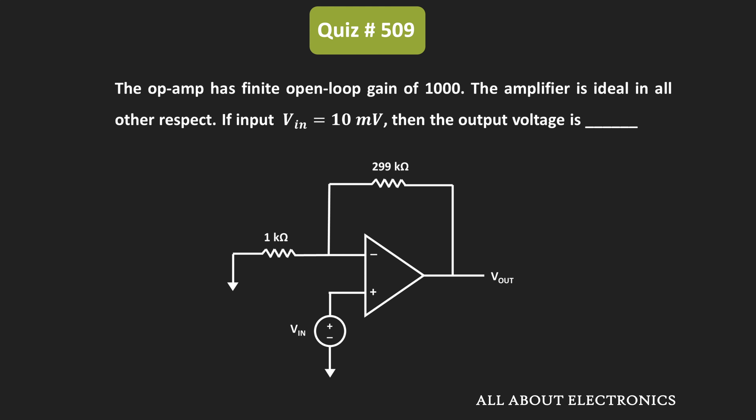Hey friends, welcome to the YouTube channel All About Electronics. In this question, we have been given an op-amp based circuit where the finite open-loop gain of the op-amp is equal to 1000. Apart from that, the given op-amp is ideal in all other respects. We have been asked to find the output voltage of this op-amp circuit whenever the input voltage Vin is equal to 10V.